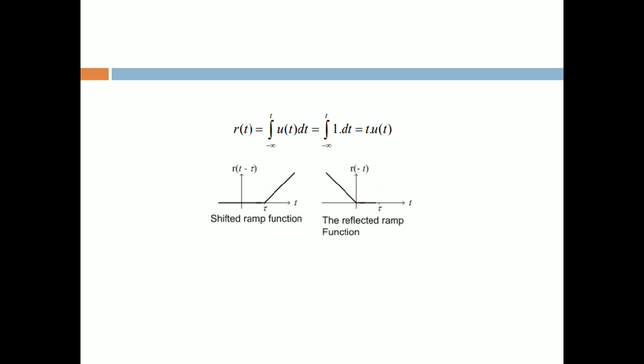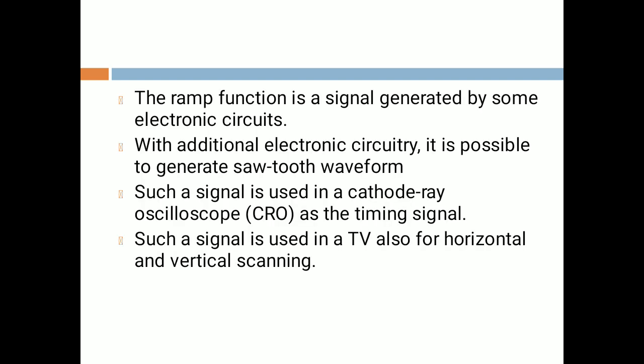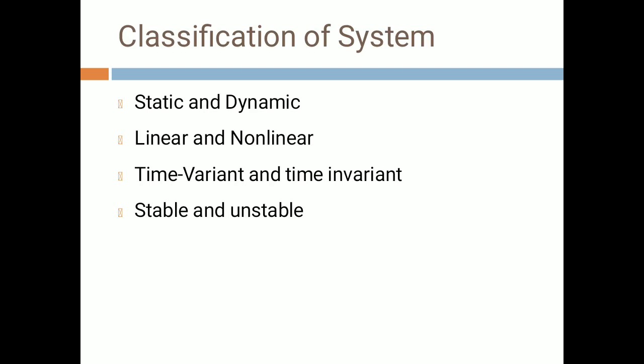The ramp function is a signal generated by electronic circuitry. With additional electronic circuitry it is possible to generate a sawtooth waveform — a signal that looks like a sawtooth. Such a signal is used in cathode ray oscilloscope (CRO) as a timing signal, and is also used in TV for horizontal and vertical scanning.